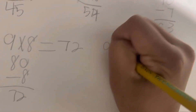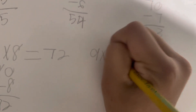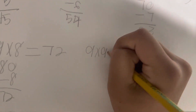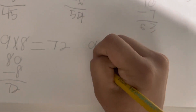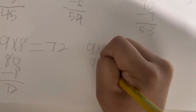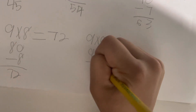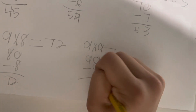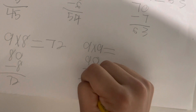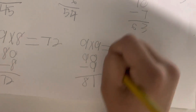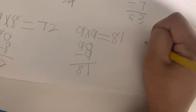9 times 9 equals. You add a 9, then add a 0, then minus 9. It equals 81. The answer is 81.